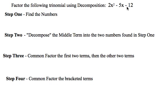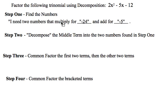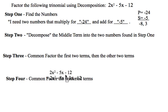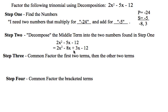2x squared minus 5x minus 12. If I want to factor this, again I start with my sentence: I need two numbers that multiply for negative 24 and add for negative 5. With a bit of thinking and some calculator checks if necessary, we come up with the two numbers of negative 8 and positive 3.